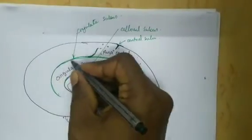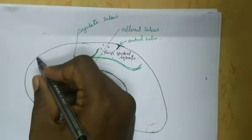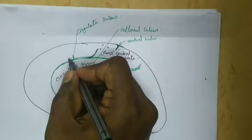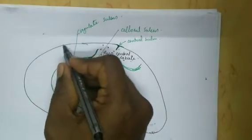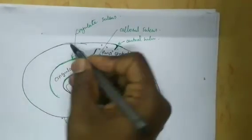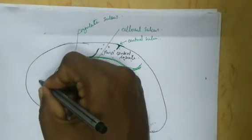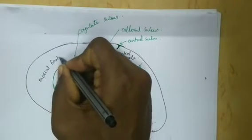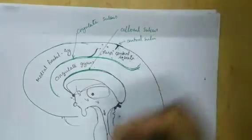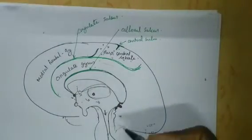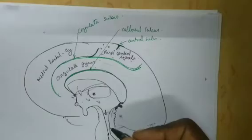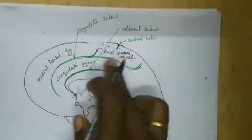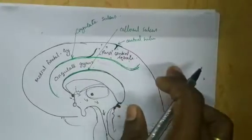Above the cingulate sulcus, between the cingulate sulcus and the supramedial border, we have the medial frontal gyrus. So these are the gyri related to these two sulci.